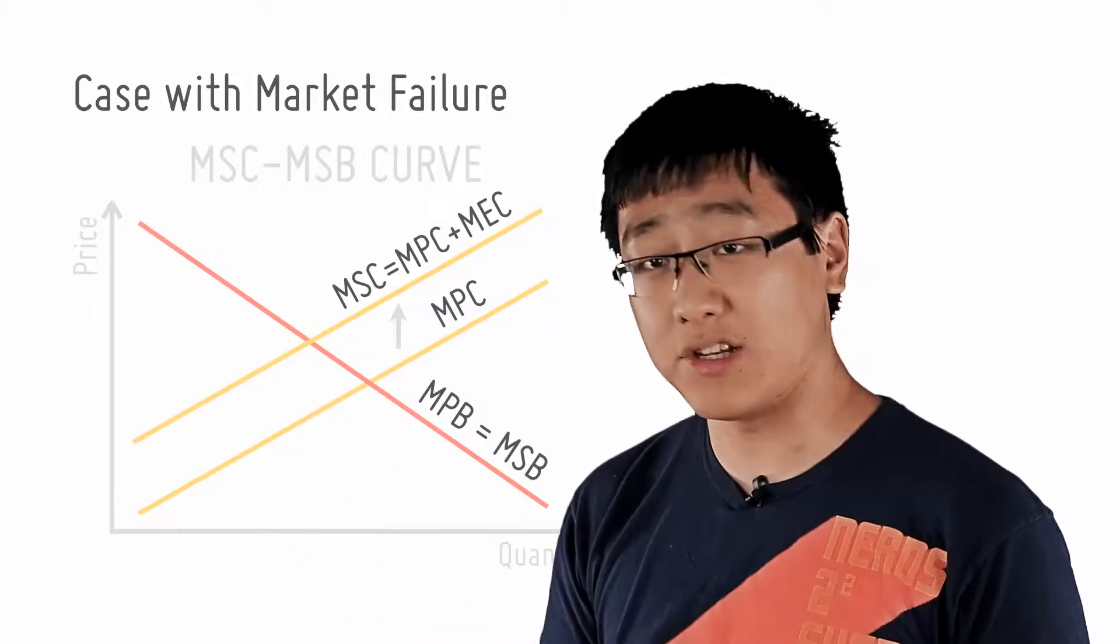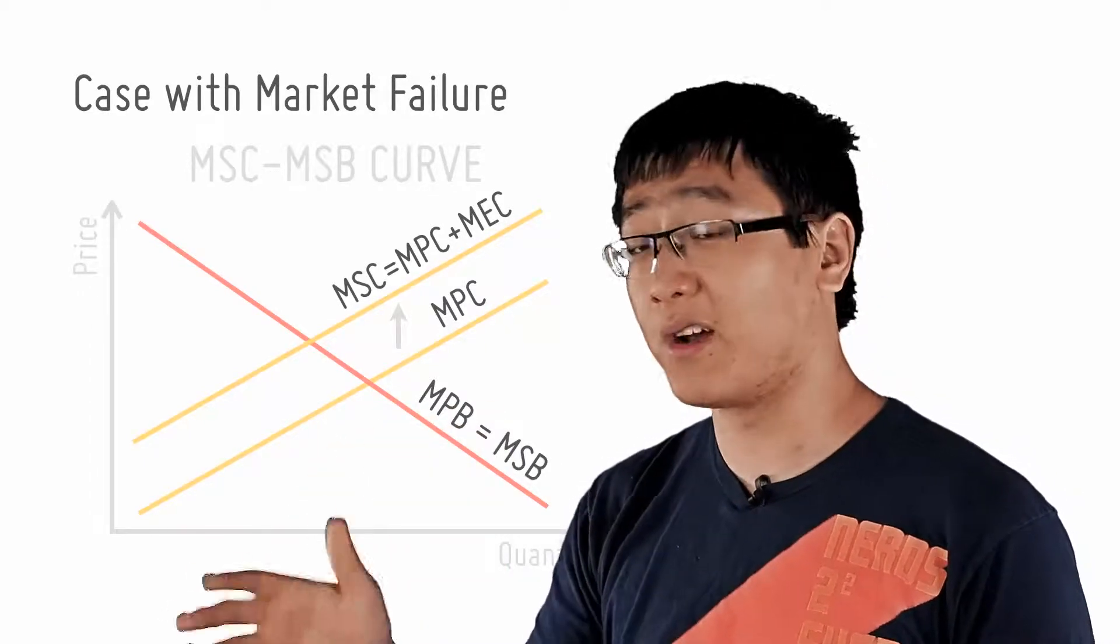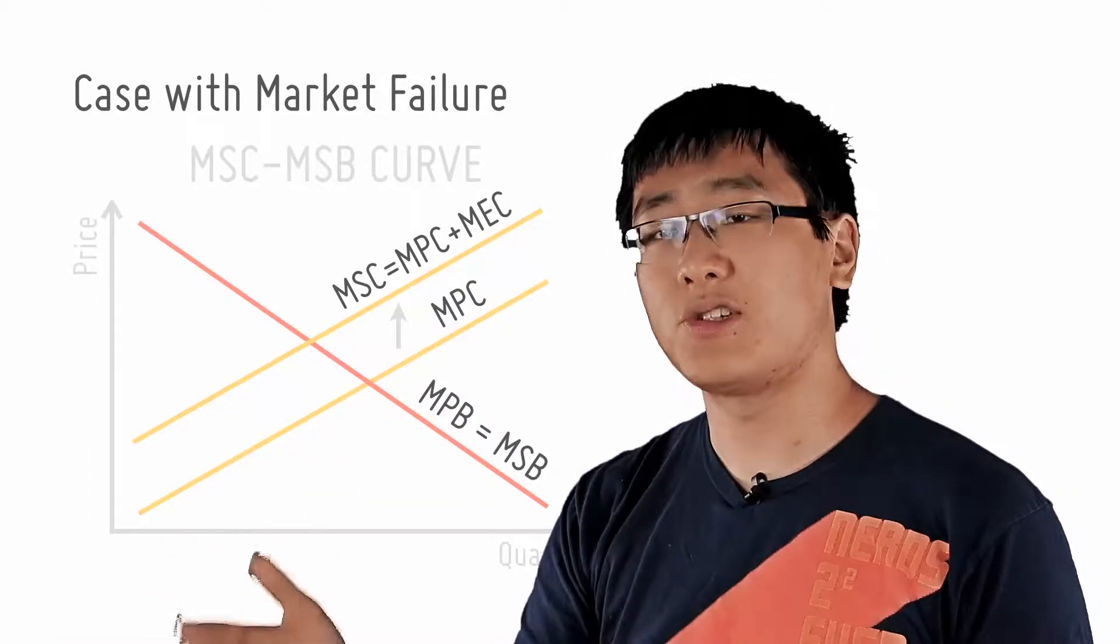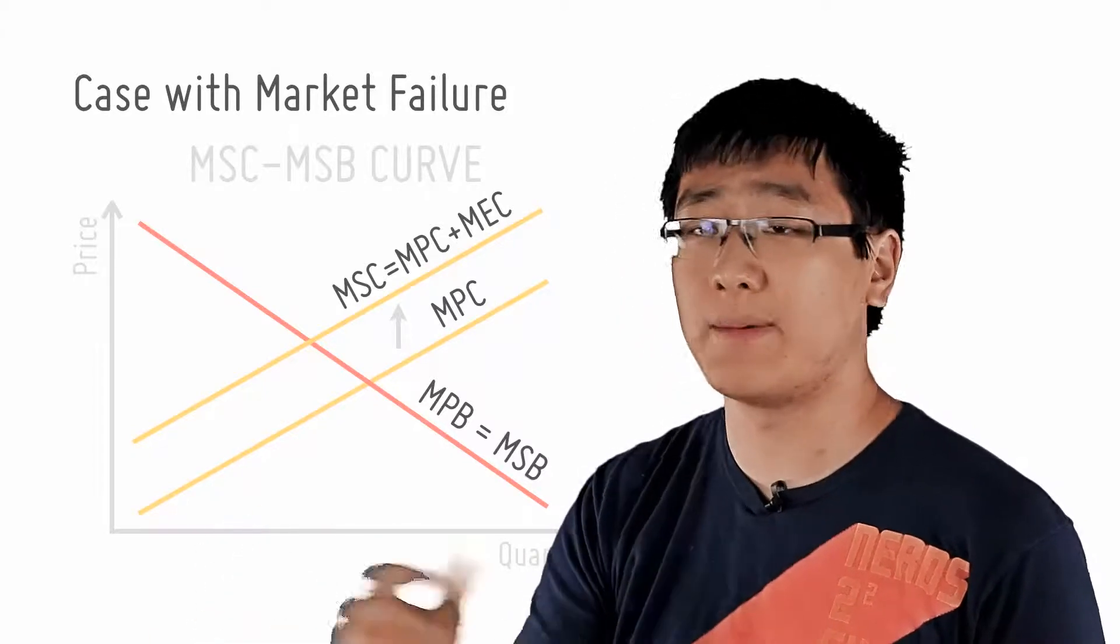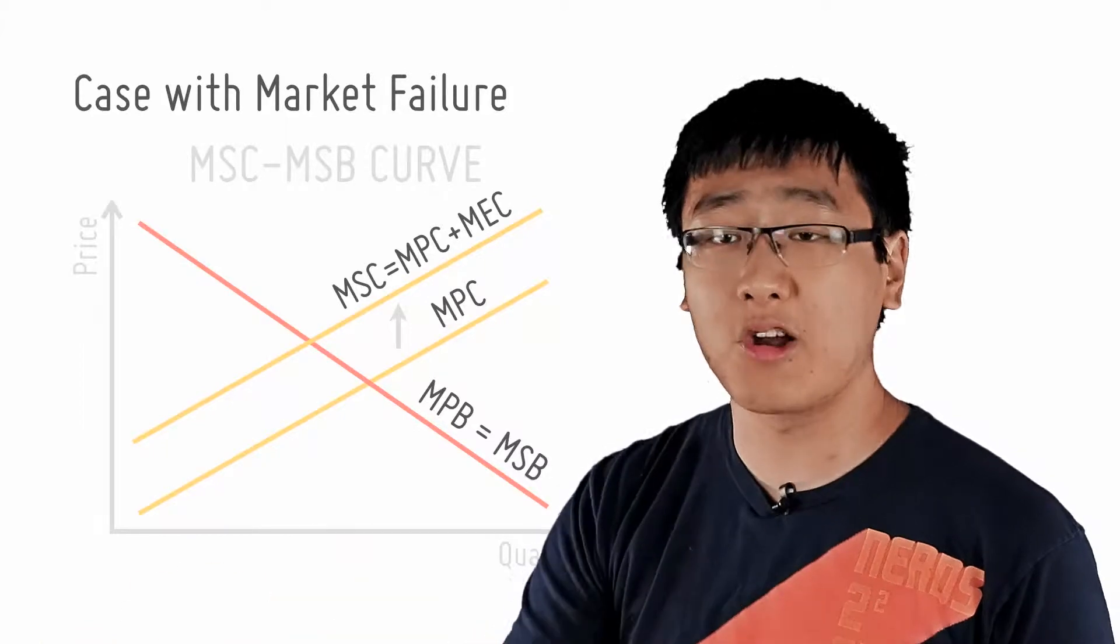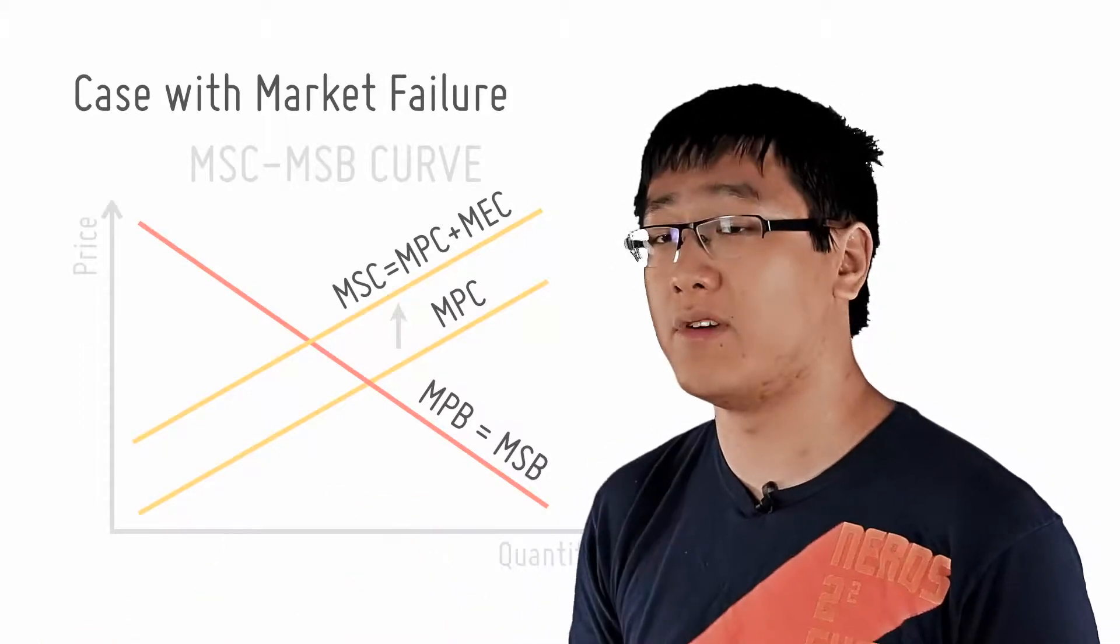Let's take some time to digest this. The MSC curve shows the cost of society. It shows the MPC, which is the cost borne by the firm itself—its raw materials, its labor, whatever—plus the marginal external cost borne by the environment, the fishermen, and everything else.